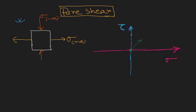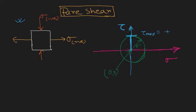The center is going to be at the origin and the radius is going to be sigma. So the center is at (0, 0) and radius is sigma. The maximum shear stress is tau_max, which is simply plus or minus sigma — if you consider both points on the circle, one is minus sigma and the other is plus sigma.